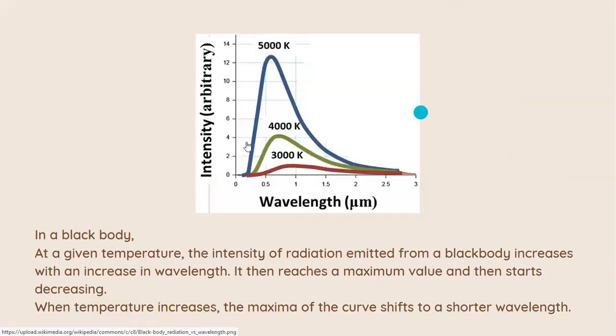So there was a graph which you need to look at. Here you have the wavelength and the intensity. At a particular temperature, if you notice all of these are temperature dependent, the intensity of radiation increases with increase in wavelength. It increases with increase in wavelength, reaching a maximum position.